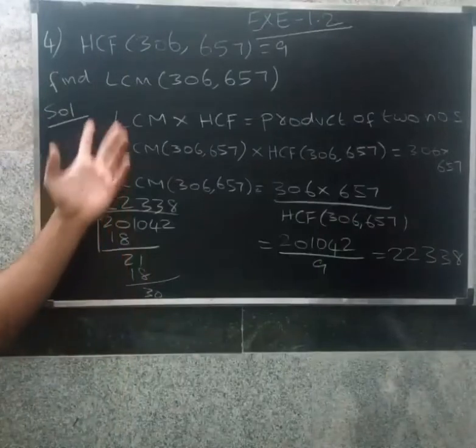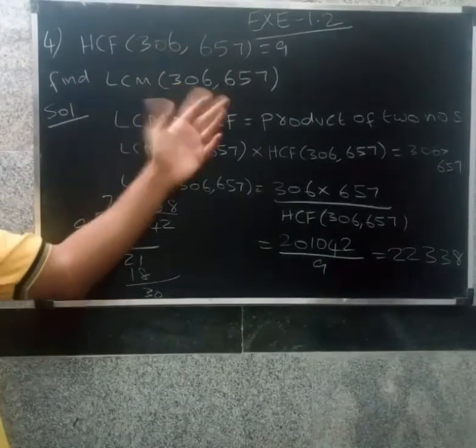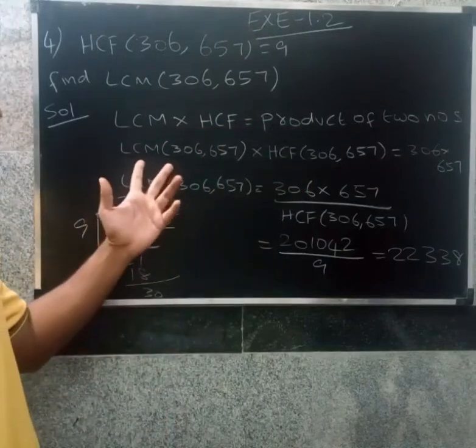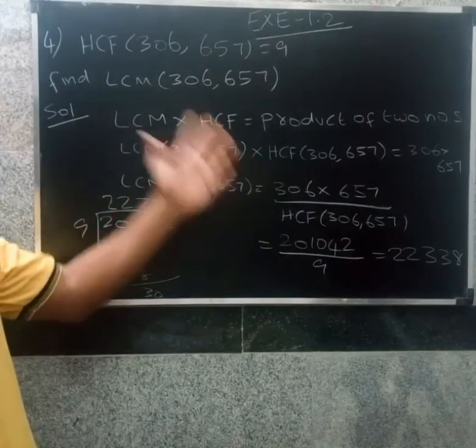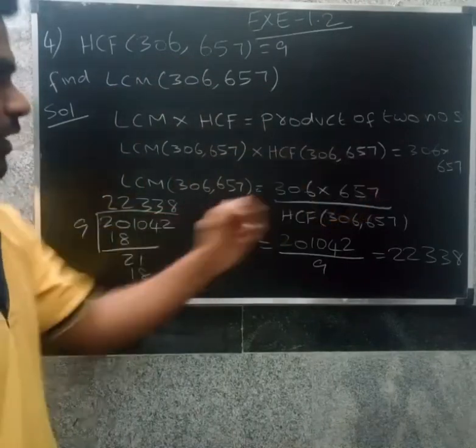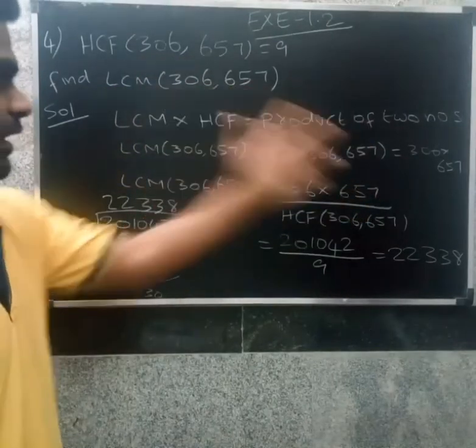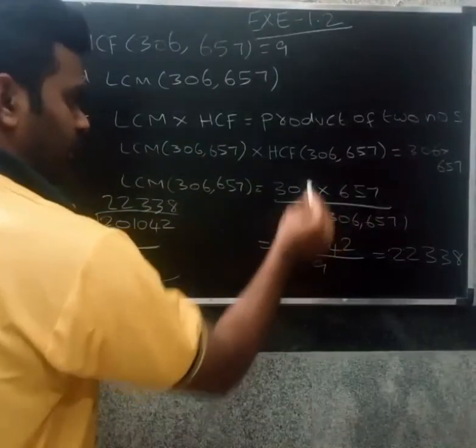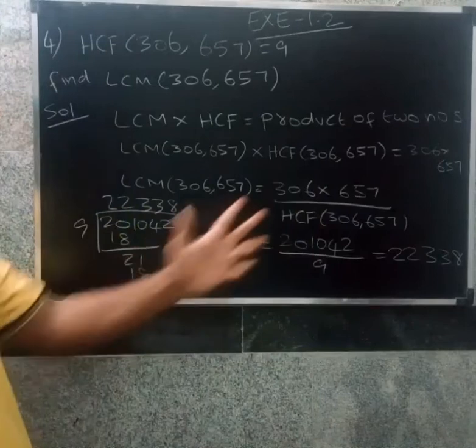If we use the formula the other way, LCM into HCF equals product of two numbers. LCM of 306, 657 into HCF of 306, 657 equals product of two numbers, 306 into 657. LCM equals 306 into 657 divided by HCF of 306, 657.